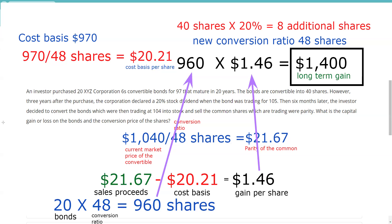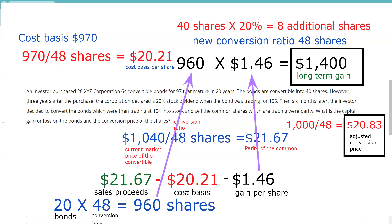For the adjusted conversion price, I take the $1,000 par value — because that's where the conversion terms are based — and divide by 48. That gives me the adjusted conversion price of $20.83. So the capital gain is $1,400 long-term, and the adjusted conversion price is $20.83.